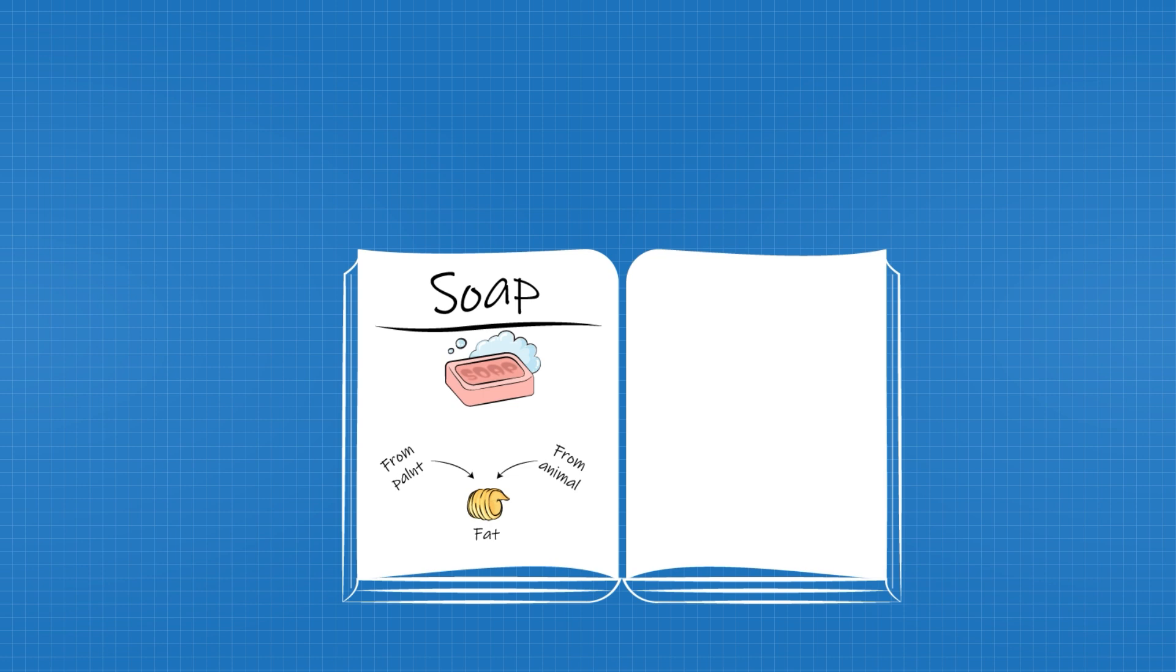You mix the fat with something super basic. Lye, like sodium hydroxide. What? Lye? That super caustic stuff? Sounds wild, right? But this is chemistry, not witchcraft. Lye is just a strong base. It is made, for example, by boiling charcoal in hot water. When fat meets lye, you trigger a chemical reaction called saponification. As a result, soap and glycerin are produced.